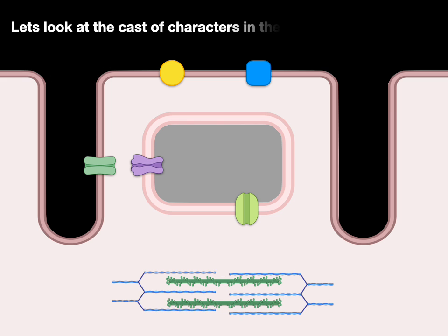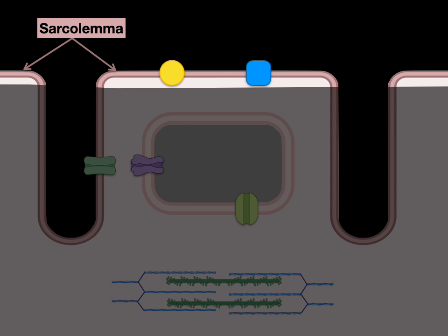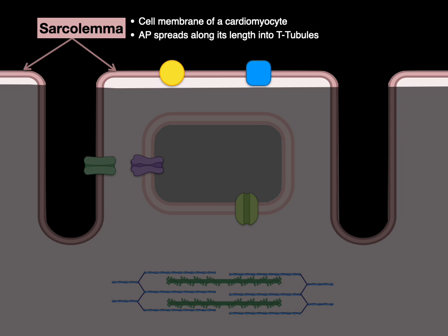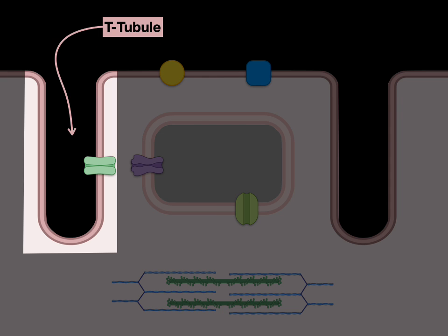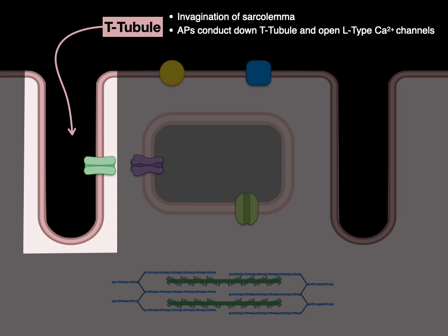Using this picture, let's look at the cast of characters in the EC coupling show. First, the sarcolemma, which is the cell membrane of a cardiomyocyte — it's where the action potential spreads along its length down into the T-tubules, which are an invagination of the sarcolemma or cell membrane, where action potentials conduct down the T-tubule and then open L-type calcium channels. This ensures a uniform release of calcium from the SR.